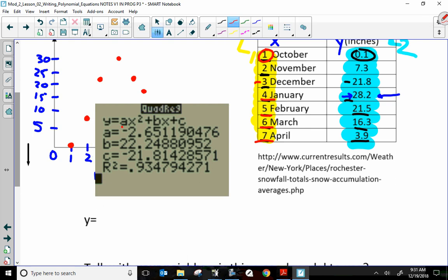So, y equals my a values times x squared. So, it's negative 2.651. This one will round up to a 2 because the number after it is 5 or bigger. 6512x squared. Right? Plus bx. b is 22.2488. That second 8 will remain an 8 because the number after it is less than 5. 2, 4, 8, 8.